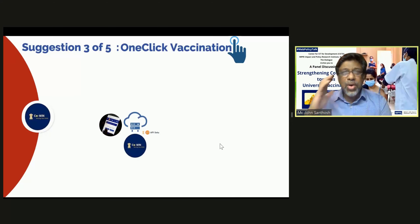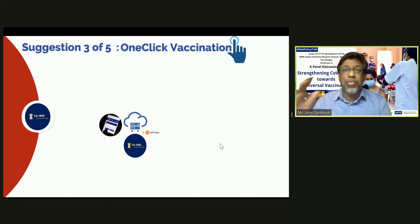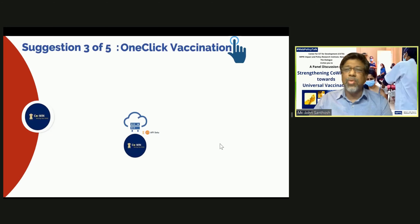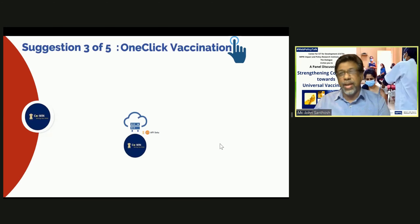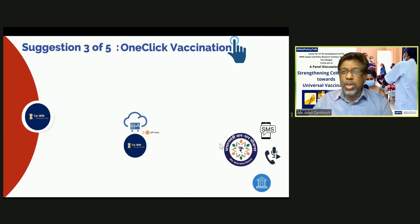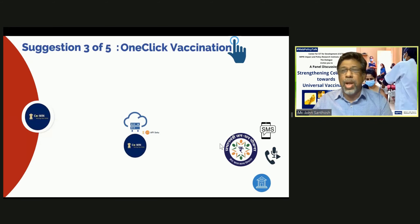If you can reimagine this CoWIN platform without a front end, what would it look like? In India, a large population of people have Jan Dhan and Yojana bank accounts.